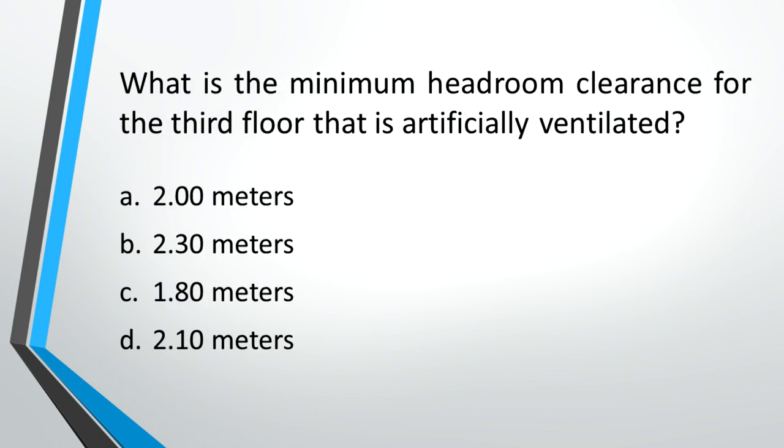What is the minimum headroom clearance for the third floor that is artificially ventilated? A: 2 meters, B: 2.3 meters, C: 1.8 meters, D: 2.1 meters. Answer: D, 2.1 meters.